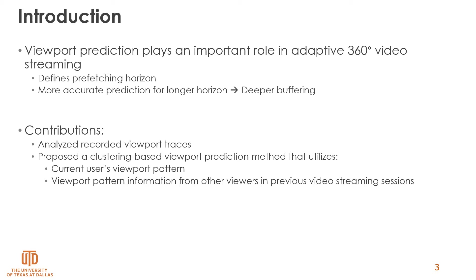A buffer of more than two seconds is desirable for streaming under unstable network conditions. In this paper, we investigate the viewport prediction problem for predictions of longer horizons, more specifically for scenarios where we have access to the history of previous viewers. In this work, we study a dataset of viewport traces and apply clustering methods on the traces to see how users' viewport pattern changes over time in relation to the clusters. We then propose a prediction method that incorporates both individual users' viewport pattern and the history of other viewers watching the same video.